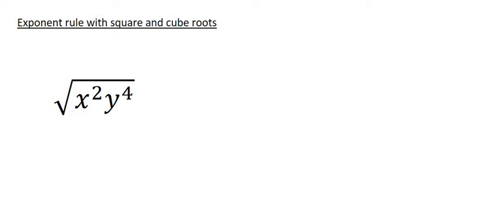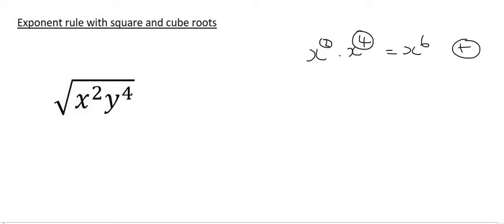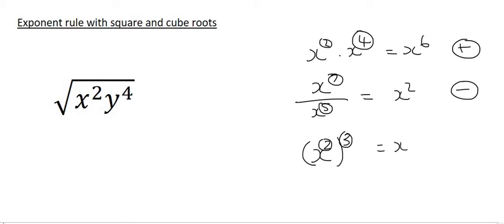In videos before this, we have looked at the addition rule of exponents, which says that if the base is the same, then you add the exponents. Then we've also looked at ones where we have to subtract the exponents, and so that gave us x to the power of 2. Then we looked at the power rule, which says that if we have something like this, then we have to multiply. And so what haven't we done? We haven't divided, and that's what we're going to do when we're busy with square roots and cube roots.